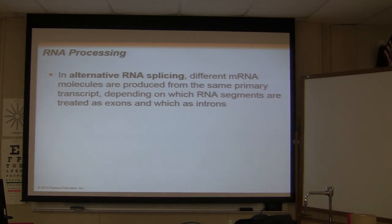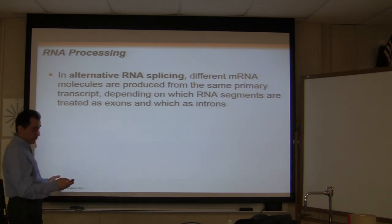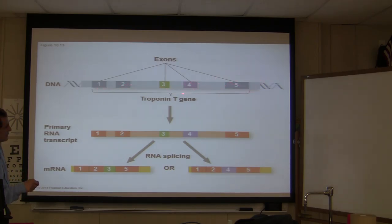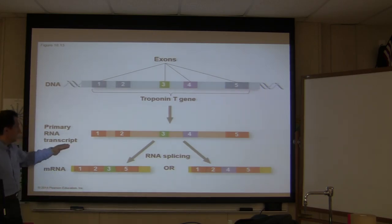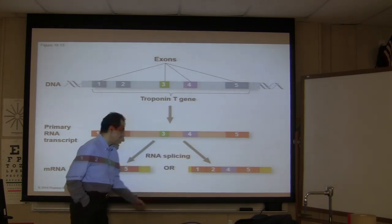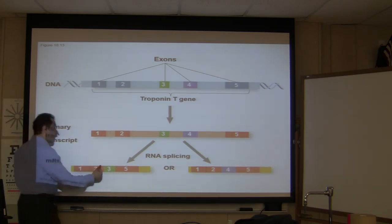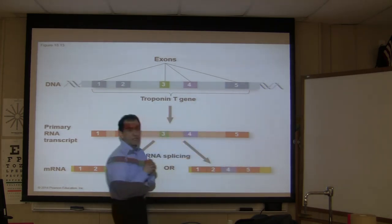In alternative RNA splicing, different RNA molecules are produced from the same primary transcript, depending on which RNA segments are treated as exons or introns. If you have a gene with exons 1, 2, 3, 4, and 5, and your primary RNA transcript has all five, then keeping exons 1, 2, 3, 5 (treating 4 as an intron) gives a different protein than keeping exons 1, 2, 4, 5 (treating 3 as an intron). Different mRNA molecules are produced from the same primary transcript.